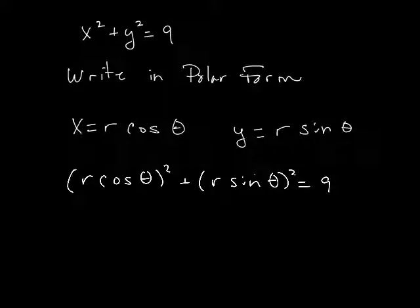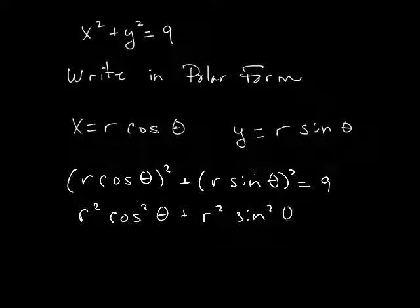All I'm doing here is this now becomes R cosine theta squared plus R sine theta squared is equal to 9. Well, what is this? This is R squared cosine squared of theta plus R squared sine squared of theta is equal to 9. I still need my greatest common factor.